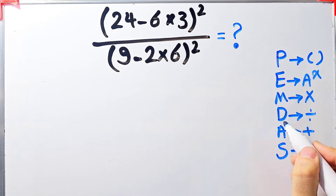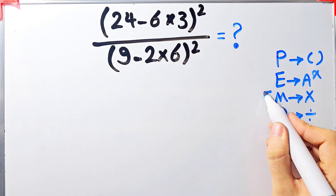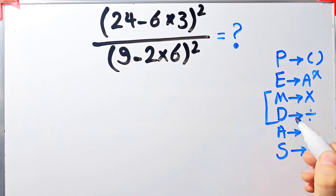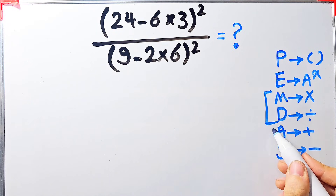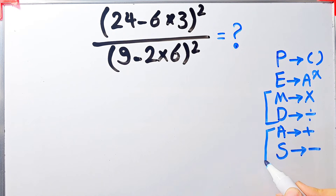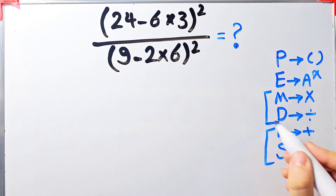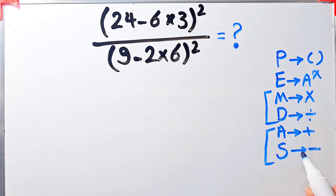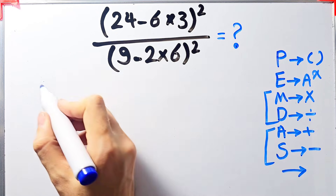Multiplication and division have the same level of priority. Also, addition and subtraction have the same level of priority. When we have operations at the same level, we start from the left and simplify. Let's simplify and solve this question step by step together.